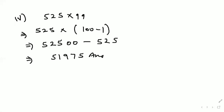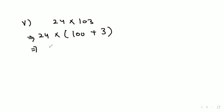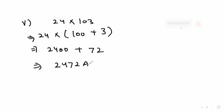Now come to the fifth part: 24 into 103. We write 103 as 100 plus 3. So 24 into 100, plus 24 into 3. 24 into 100 is 2,400, and 24 into 3 equals 72. So 2,400 plus 72 equals 2,472.